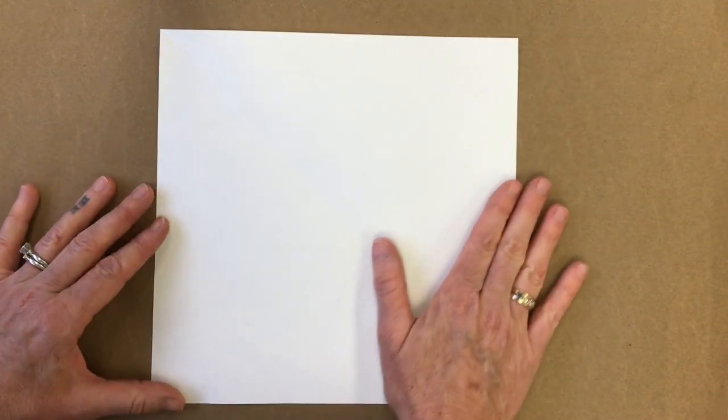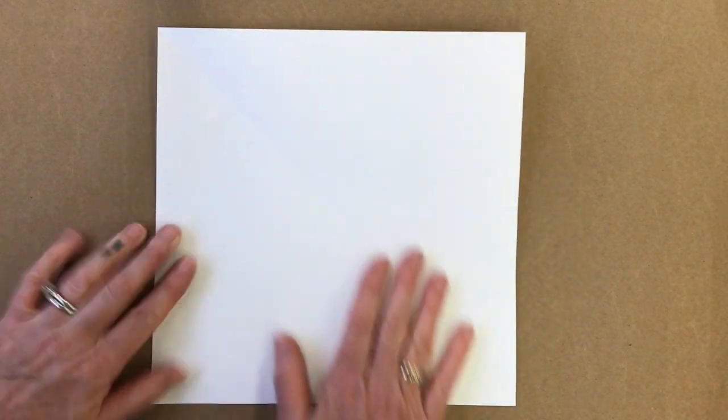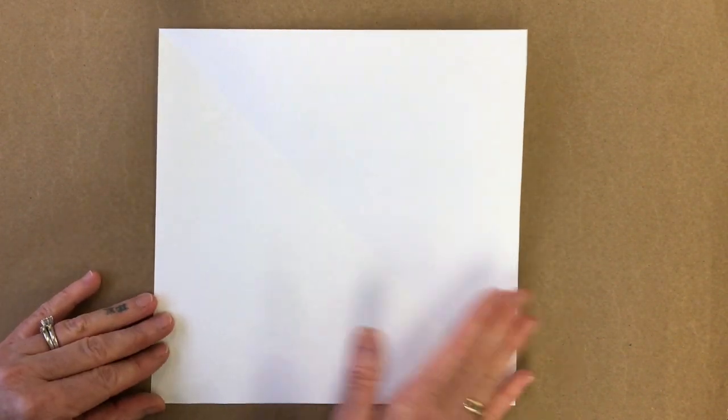That is how you make a perfect square out of a rectangle. Doesn't matter what size you start with, if it's a rectangle you can turn it into a square using that method. So thank you for watching.